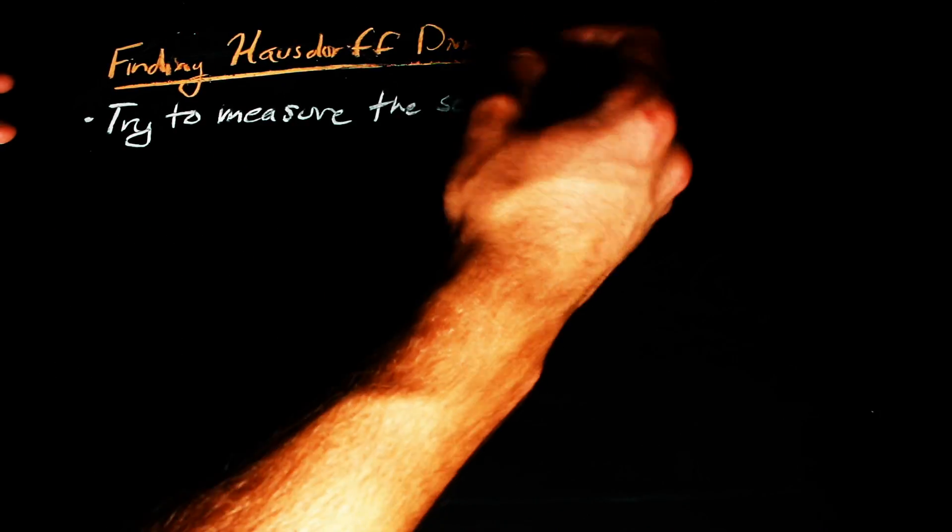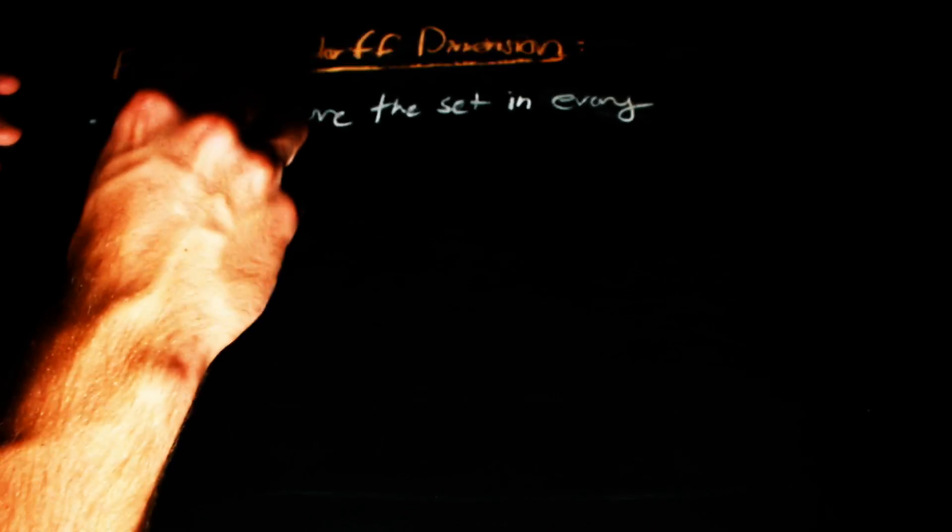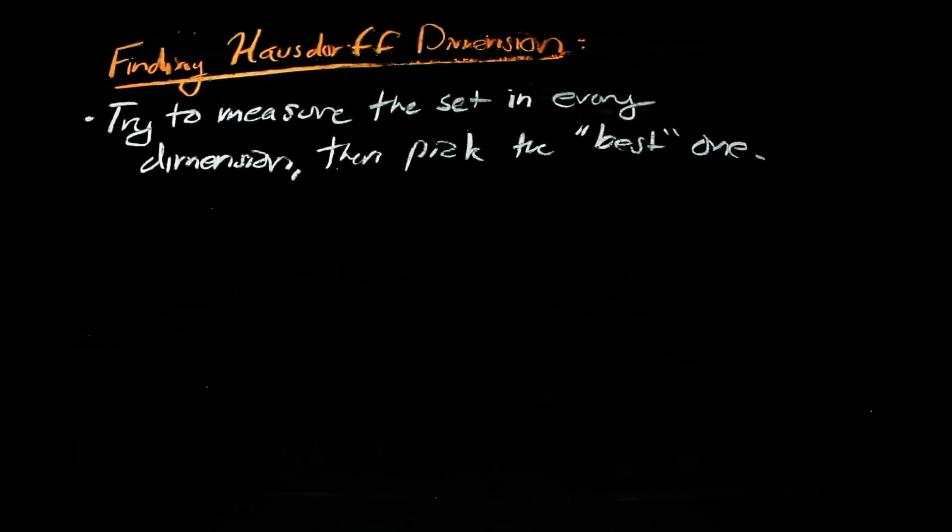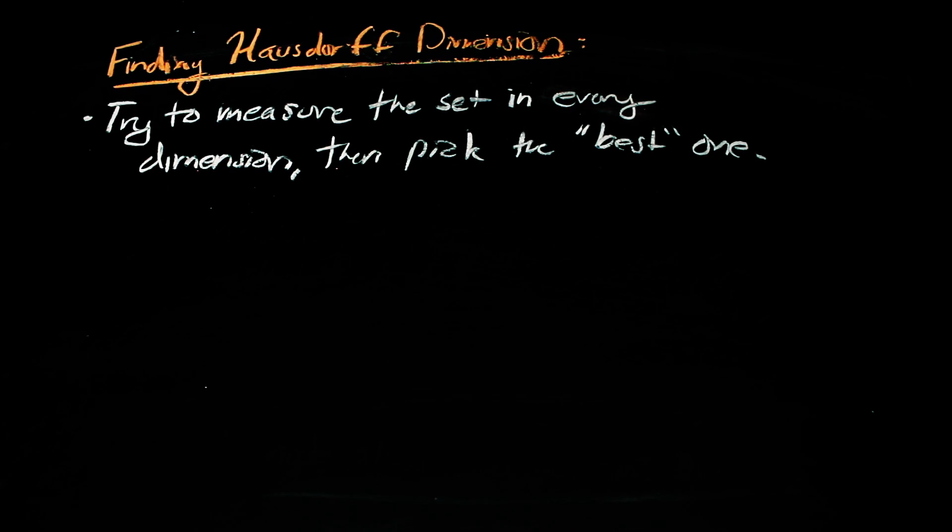When we take the Hausdorff dimension of a set, we're essentially doing what we just did with the curve C, but on a larger scale. That is, we'd measure the set with objects of all possible dimensions, and then the one that works the best tells us the dimension of the set in question.